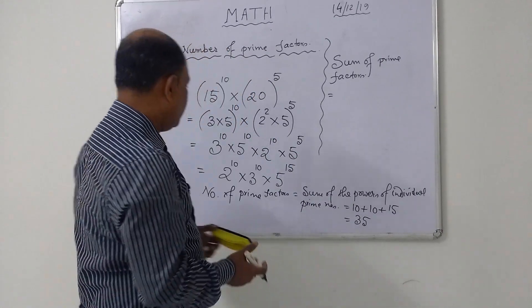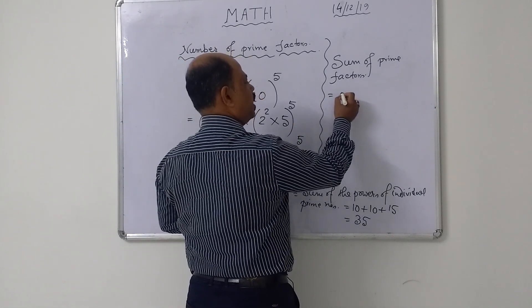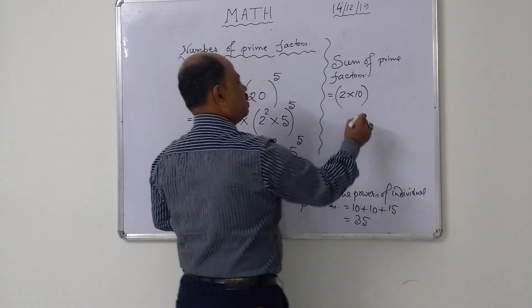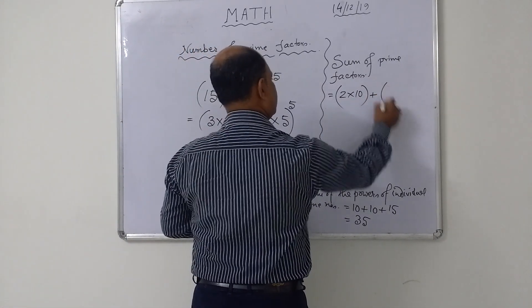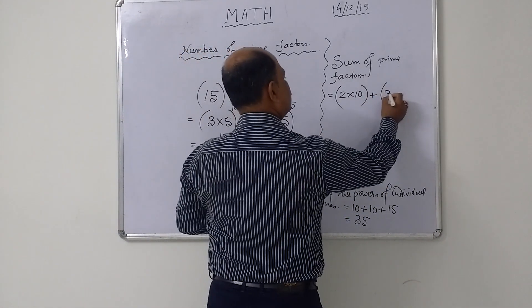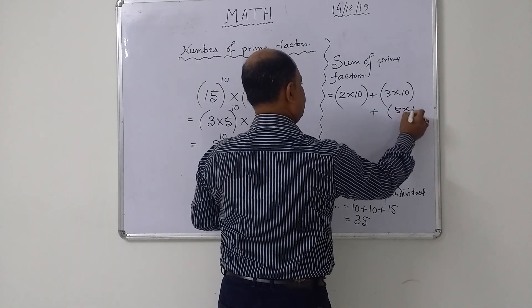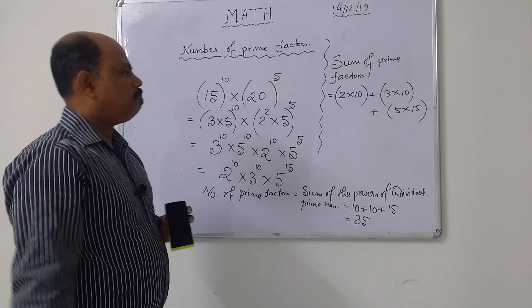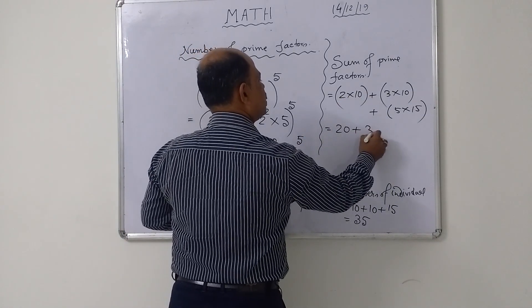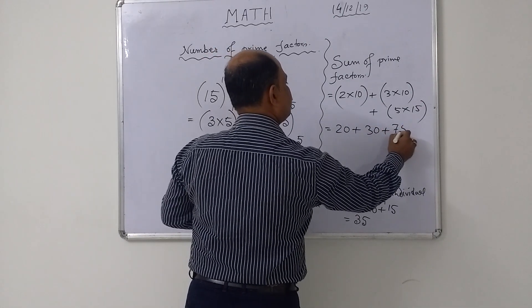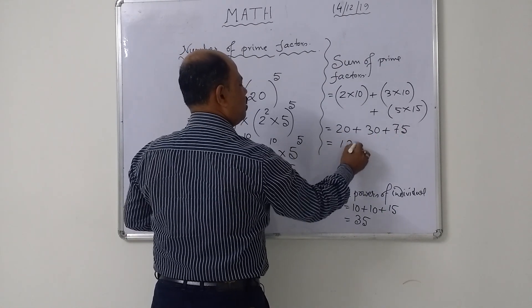So the sum of prime factors equals: how many 2s — 10 times, so 2 into 10 (base into power), plus 3 into 10 (base into power), plus 5 into 15 (base into power). After calculation: 20 plus 30 plus 75, that is 125.